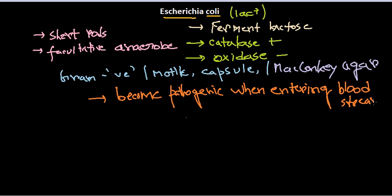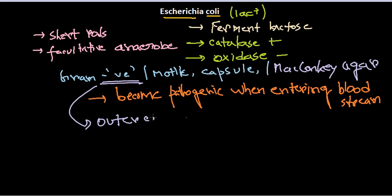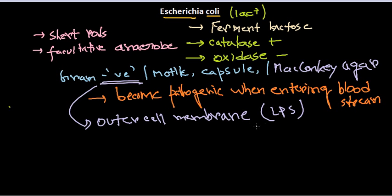When they enter the bloodstream, only then do they become pathogenic in most cases; otherwise they are non-pathogenic in nature. Escherichia coli can be divided depending upon different antigens present in their outer membrane. As they are gram-negative bacteria, they have an outer cell membrane. This outer cell membrane contains lipopolysaccharide, or LPS.